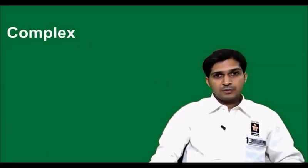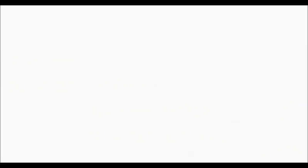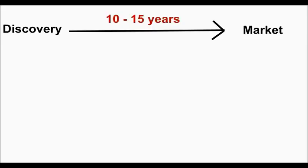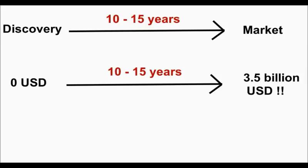However, the process is very complex, time consuming and resource intensive, requiring multidisciplinary expertise and innovative approaches. It takes about 10 to 15 years to develop one new drug from the time it is discovered to when it is available for treating patients. The average cost to develop each successful drug is estimated to be 2.5 to 3.5 billion US dollars. This number includes the cost of thousands of failures.